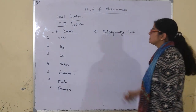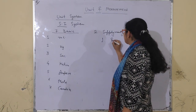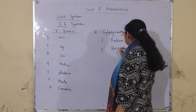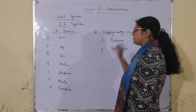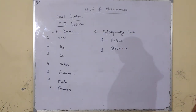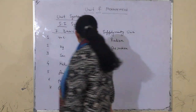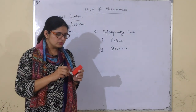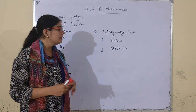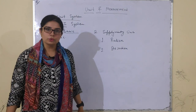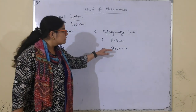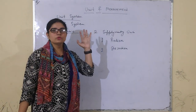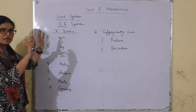Now what are two supplementary units? First one is radian and second one is steradian. Radian angle ki unit hai. Aap logon ne calculator mein degree aur radian dono likha dekha hoga — degree aur radian dono angle ki unit hoti hain. Steradian bhi angle ki unit hai. Ab hum radian aur steradian ko detail mein samjhenge.